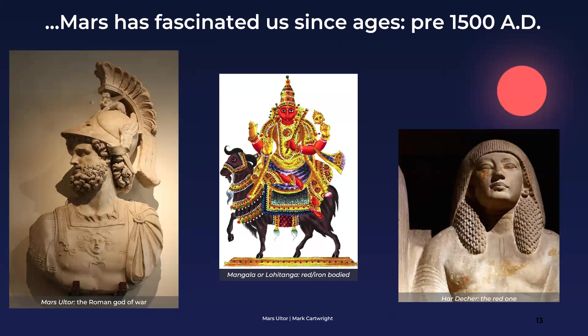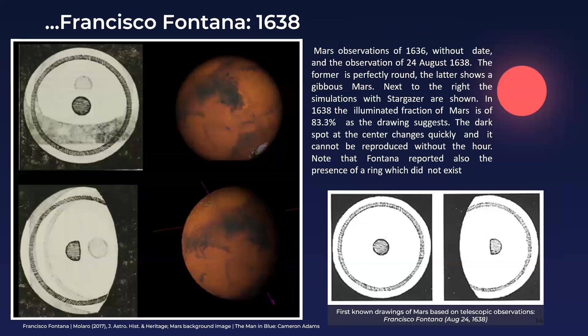People were scared of Mars throughout history. Fast forwarding to the 17th century, Francisco Fontana was one of the few non-professional astronomers who built his own telescope, pointed it at Mars, and started observing and recording what he could see. You can see the diagram he drew — not very accurate compared to what modern telescopes show. He drew a ring structure that doesn't really exist on Mars, but he was very enthusiastic and deserves recognition for that.